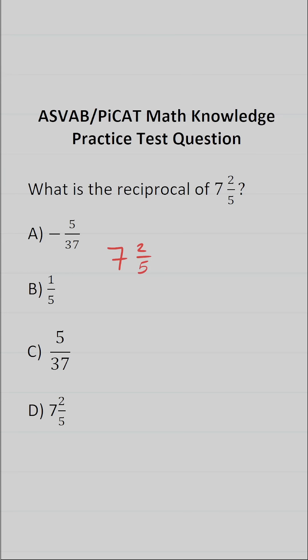The first thing I want to do is express 7 and 2 fifths as a fraction itself. More specifically, I'm going to express it as an improper fraction by doing 7 times 5 plus 2. 7 times 5 is 35, plus 2 is 37.